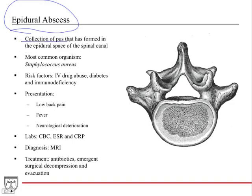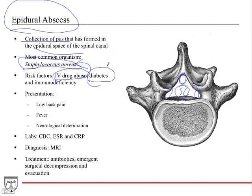Epidural abscess is a collection of pus formed in the epidural space — just outside the dura surrounding the spinal cord. The most common organism is Staph aureus. Risk factors include IV drug users — contaminated needles put staph directly into the bloodstream — endocarditis (sometimes patients have both endocarditis and an epidural abscess simultaneously), diabetics who are somewhat immunocompromised, and people with significant immunodeficiency such as HIV, AIDS, or transplant patients.